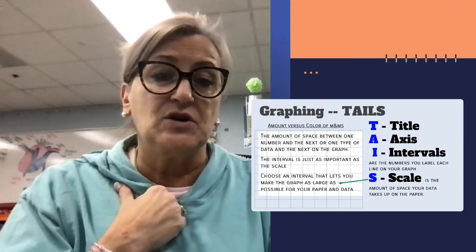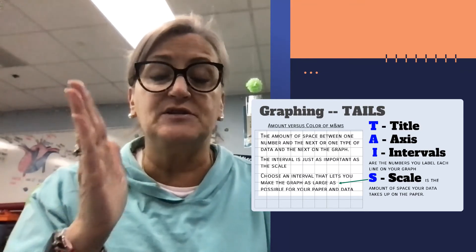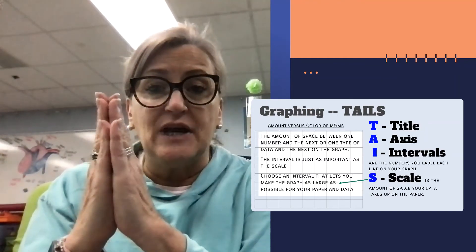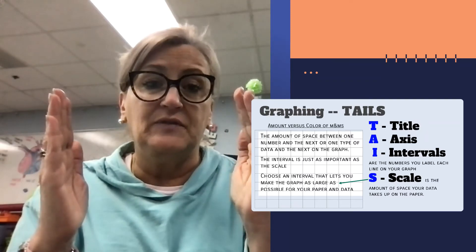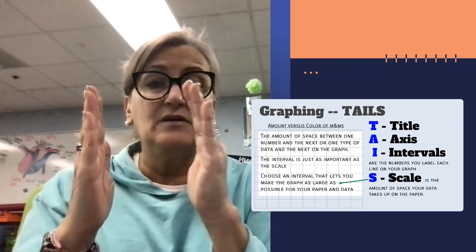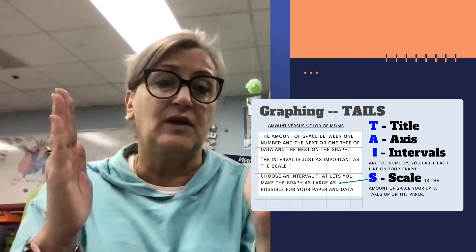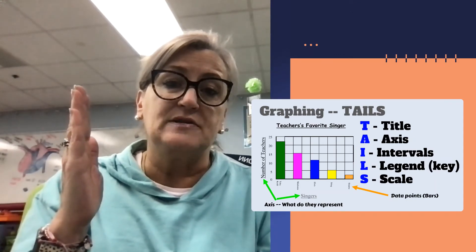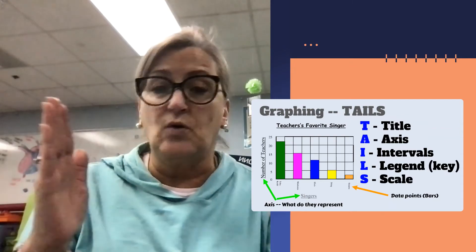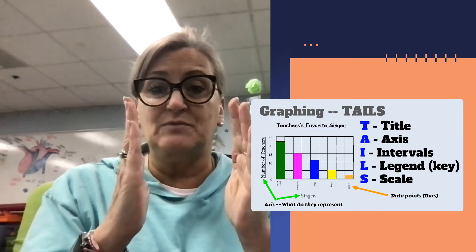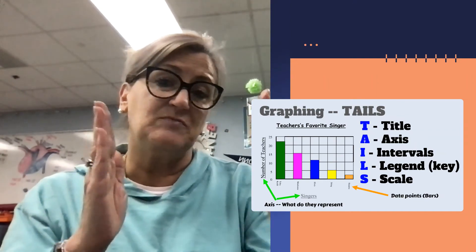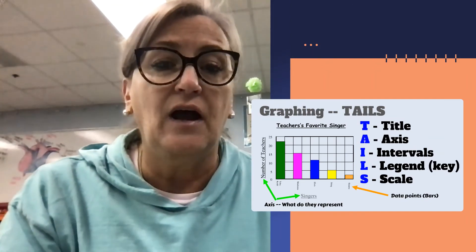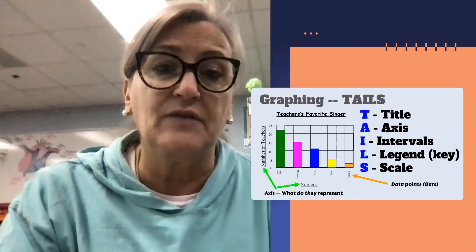Scale refers to how much space you use in the area you're given. You're not going to smush all your data into one corner — you want to spread it out evenly, leaving the same amount of space between each bar. You should use at least 75% of the space given. Jamming all your data into one little corner makes it very hard for the person looking at your graph to read it.